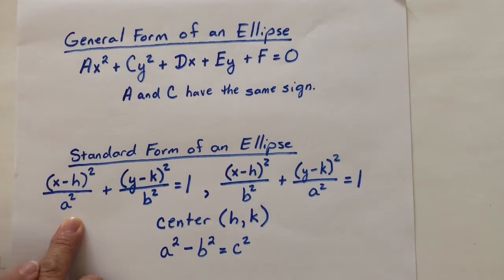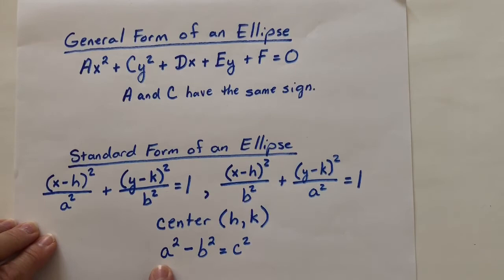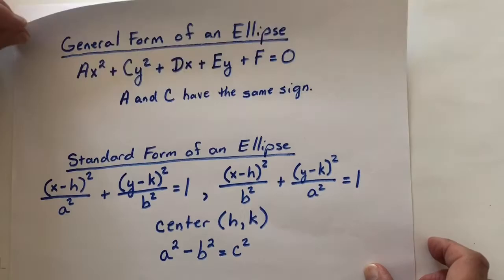So it may be underneath the x² or it may be underneath the y². And the relationship between a's, b's, and c's in an ellipse is this. So let's jump in and do a problem.